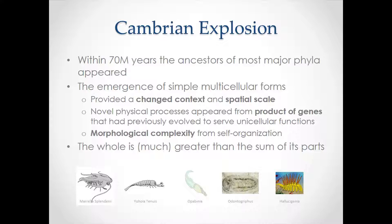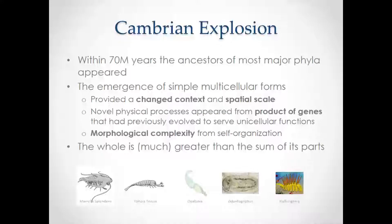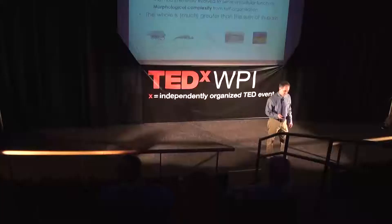Somehow, within 50 to 70 million years, all the major phyla on the planet seemed to evolve their earliest ancestors, and the diverse life forms are incredible — they even have an animal called hallucinogenia that they couldn't understand. The best theory as to what happened is that the emergence of all these multicellular organisms introduced a changed context. Novel physical processes appeared where before there was just regulation of genes for unicellular functions, now taking over in an interesting product way — not just additive, but true products to form interesting new processes. The morphological complexity — appendages, layers, segments — all appeared from self-organization, where it's true that the whole is greater than the sum of its parts.